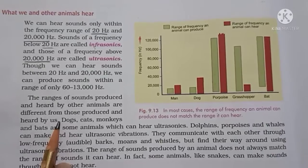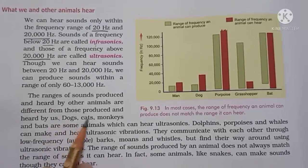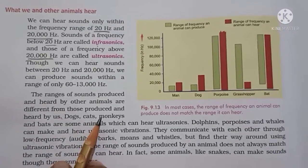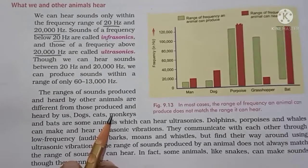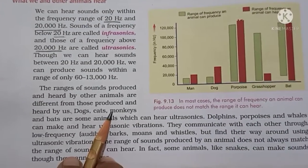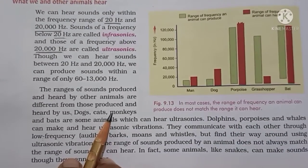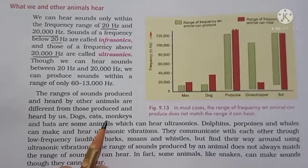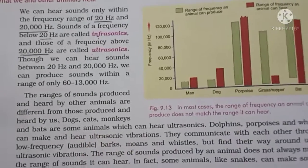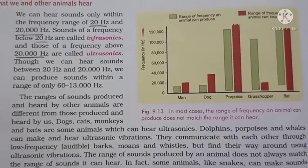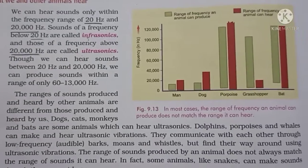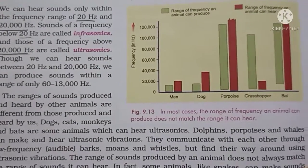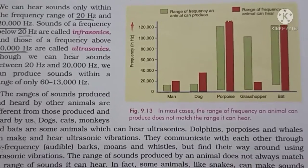The range of sound produced and heard by other animals is different from that of human beings. Rhinoceroses communicate with one another using infrasonic sound with a frequency as low as around 5 Hz. Whales and elephants also produce sound of infrasonic range, so we are not able to hear their infrasonic vibrations.